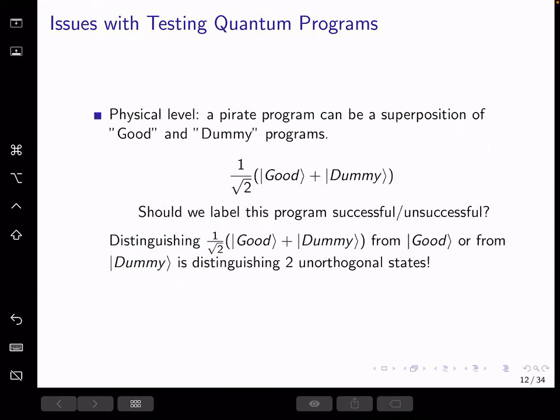The next problem is how we define success probability of pirate programs on the physical level. So imagine an adversary who sends the following state to the challenger. Here, the good state is a program that evaluates perfectly at every input. And the dummy state is a useless program.